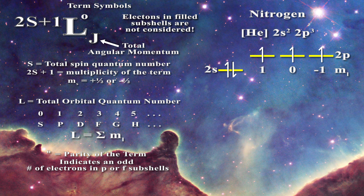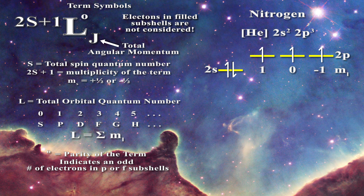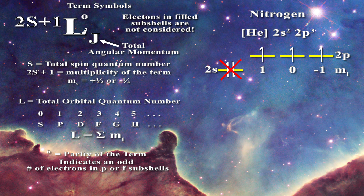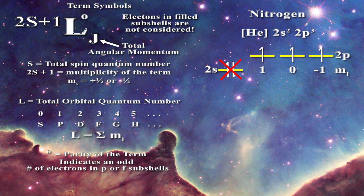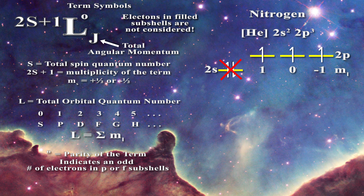The electron configuration of nitrogen is 1s2 2s2 2p3, which we can write as [He] 2s2 2p3. When determining term symbols, filled shells make no contribution to the final term, so we can ignore the 2s2 electrons. We only have to deal with the 2p electrons. According to Hund's rule in the ground state, we place one electron spin-up in each of the 2p orbitals.